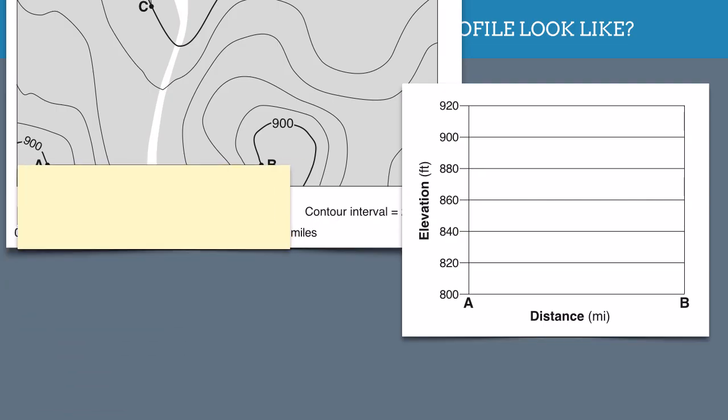We also need a piece of scrap paper. And so what we can do is line our scrap paper up with the line that we're drawing a profile along. And we're going to mark anywhere a contour line crosses our scrap paper, like so.